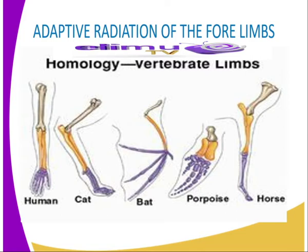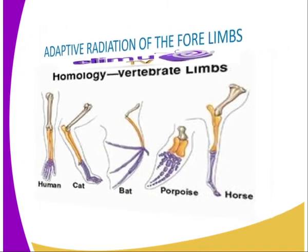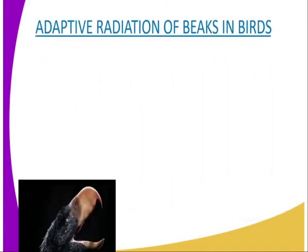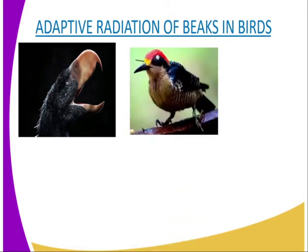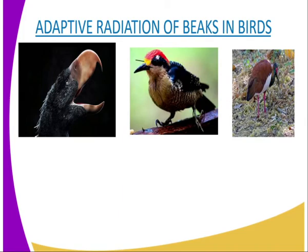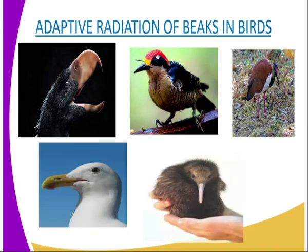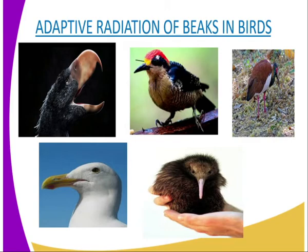Another example of adaptive radiation occurs in the beak structure of birds. Let us look at the beak structures of several birds. Beaks in birds have a common embryonic origin and basic structure, but depending on the type of food and mode of feeding, this basic structure is modified in length, shape, and size. The short stout beaks are common in seed eaters, while the nectar feeders have long slender beaks. Fruit eaters have relatively large beaks, and carnivorous birds have strong hooked beaks, as we can see from our first diagram.